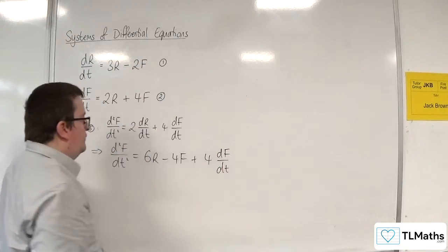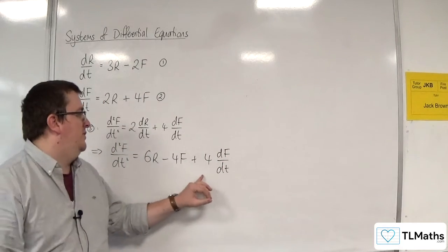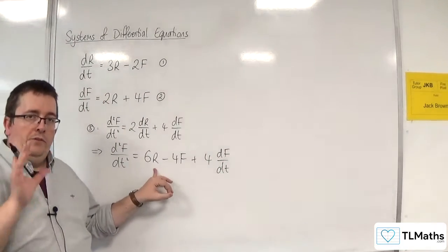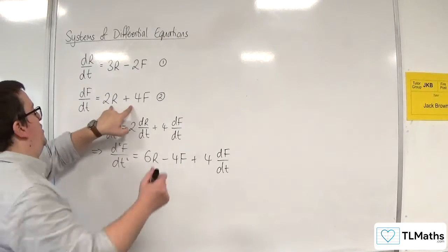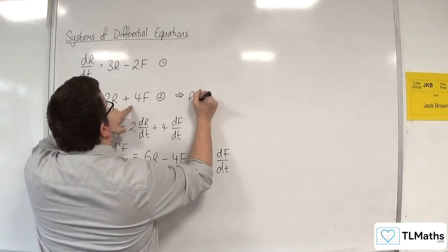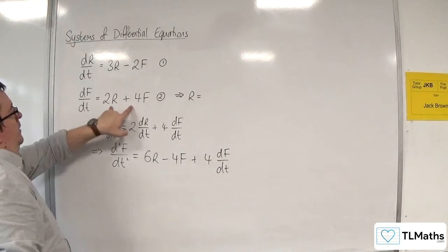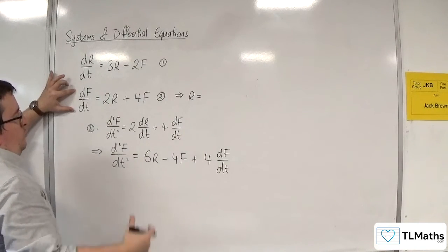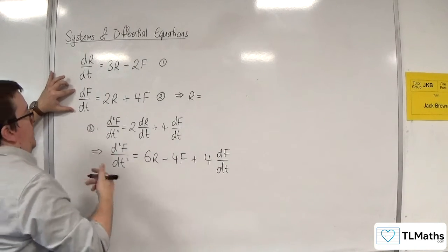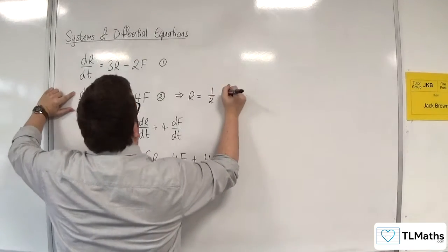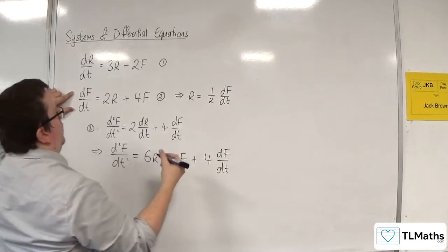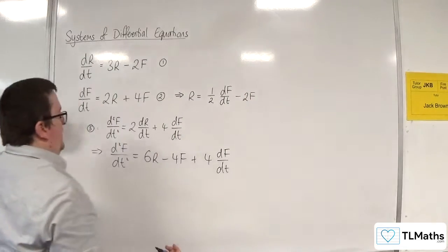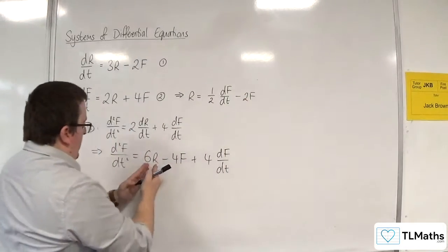Now, the problem is that this still involves R. So don't want that. So what I'm going to do is I'm going to go back to equation 2. And I'm going to rearrange this to get R equals. So if I subtract 4F from both sides and divide through by 2, I would get 1/2 dF/dt take away 2F. And now I can replace my R in here.